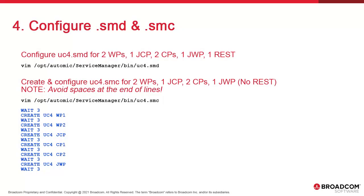Here are the code snippets. First, we configure the definitions file. We're going to set two WPs, one JCP, two CPs, one JWP, and one REST. Then, we create and configure the SMC file. We'll do the same, but we won't start REST.